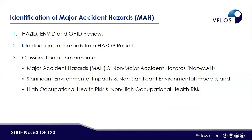Identification of Major Accidental Hazards (MAH) can be done through PHA workshops — HAZID, ENVID, and OHID — as explained before. Through these workshops, we classify hazards into MAH and non-MAH, identify significant and non-significant environmental impacts, and identify high and non-high occupational hazards. These workshops help us identify non-MAH, MAH, and significant/non-significant environmental impacts.